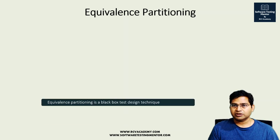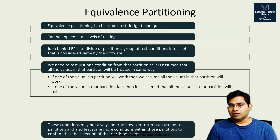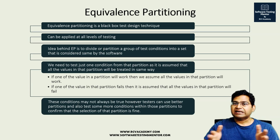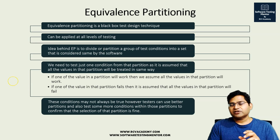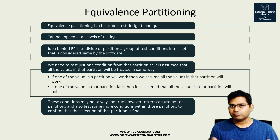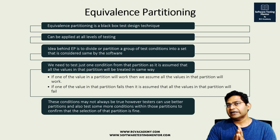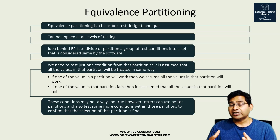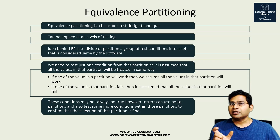Equivalence partitioning is a black box test design technique that can be applied at all levels of testing. The idea is to divide test conditions into groups that can be considered the same by the software. For example, suppose you have a text box on a web page that accepts only numbers from 1 to 10. We need to partition inputs into valid and invalid groups.